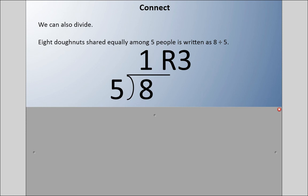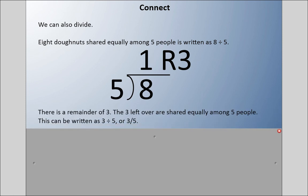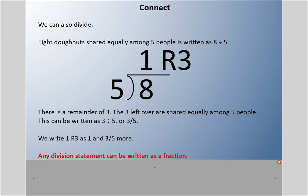Now there's that remainder of three, and remember that three has to be shared equally amongst five people. So we could write three divided by five, or actually three-fifths. Instead of using decimals, we could say it's one remainder three, which is the same as one and three-fifths more.